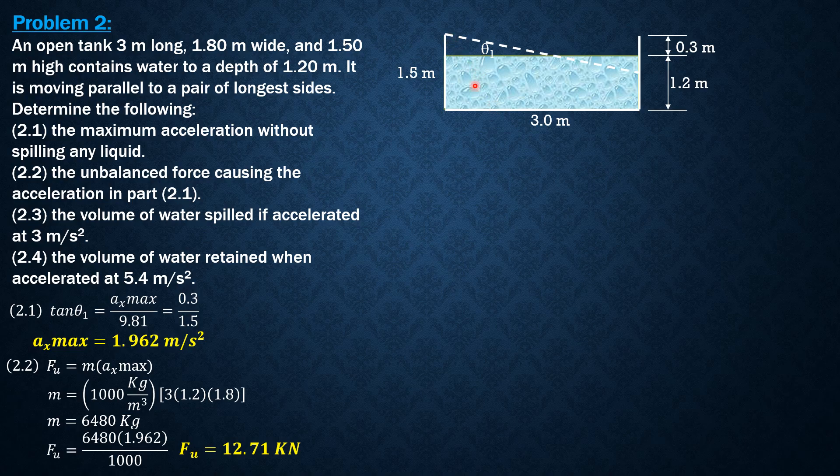Another way of computing this unbalanced force is the difference between the hydrostatic force on the rear end and the hydrostatic force on the front end. In short, it equals F1 minus F2. This hydrostatic force is rho bar H times area, where the area is rectangular, 1.8 by the depth.